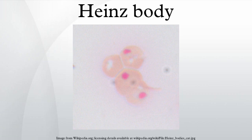Heinz bodies appear as small round inclusions within the red cell body, though they are not visible when stained with Romanowsky dyes. They appear more clearly when supravitally stained.